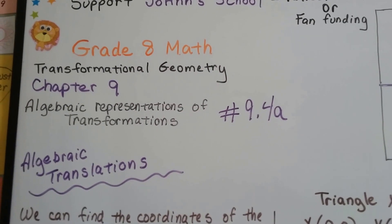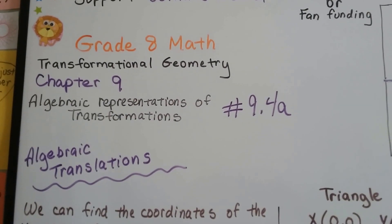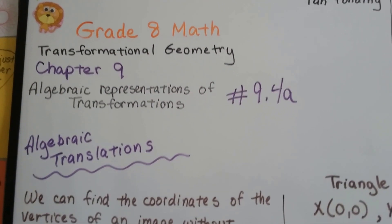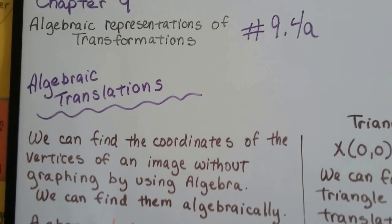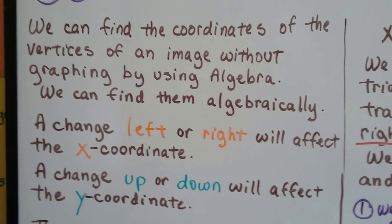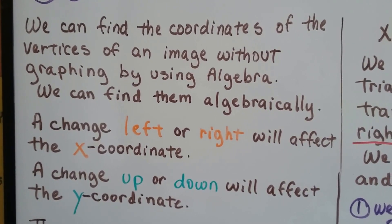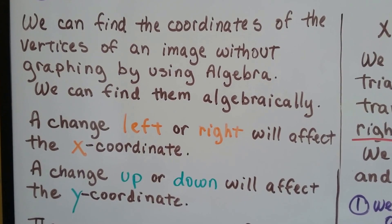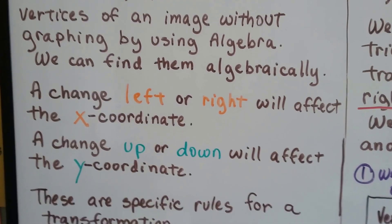Grade 8 math number 9.4a. We're doing algebraic representations of transformations now. These are algebraic translations. So we can find the coordinates of the vertices of the image without graphing by using algebra. We can find them algebraically.